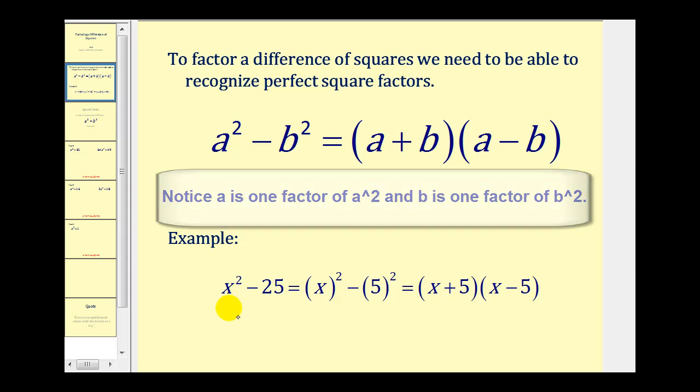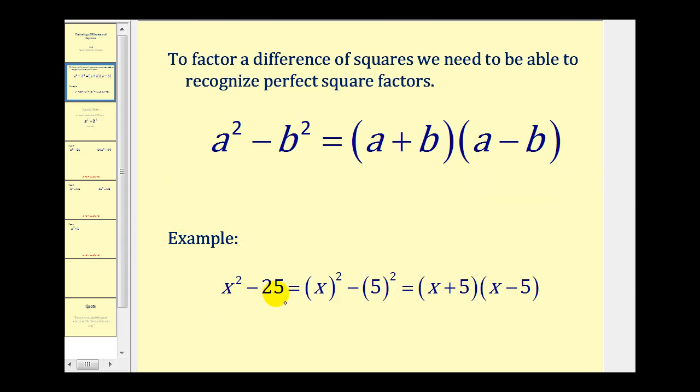For example, if we have x² minus 25, x² is a perfect square, 25 is a perfect square, and therefore x² minus 25 factors into x plus 5 times x minus 5.